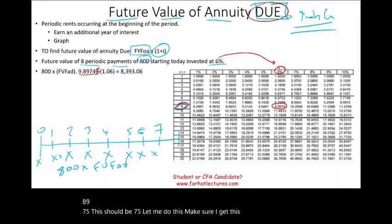What we're going to be doing next is computing the present value of an annuity. From an accounting perspective, the present value of an annuity is more important. The present value concept is more important for us than the future value — the future value is mostly used in finance courses when computing the future value of your 401k. The present value is what's really needed for accounting students, and this is what we will focus on in the next session.